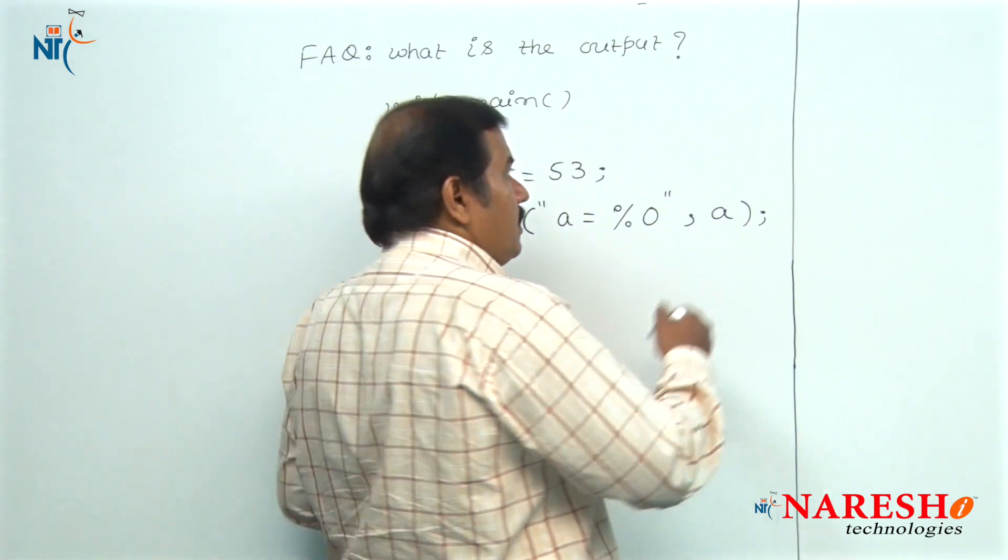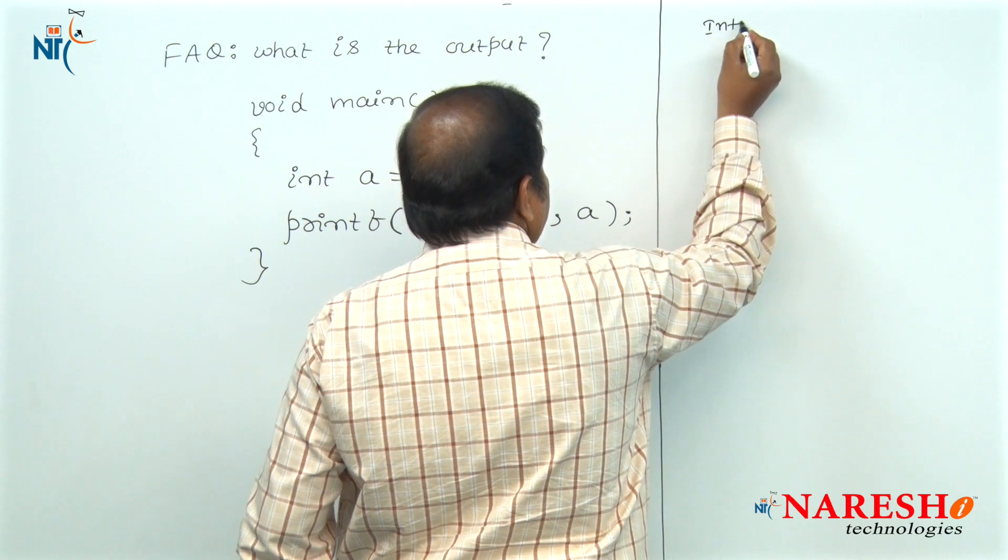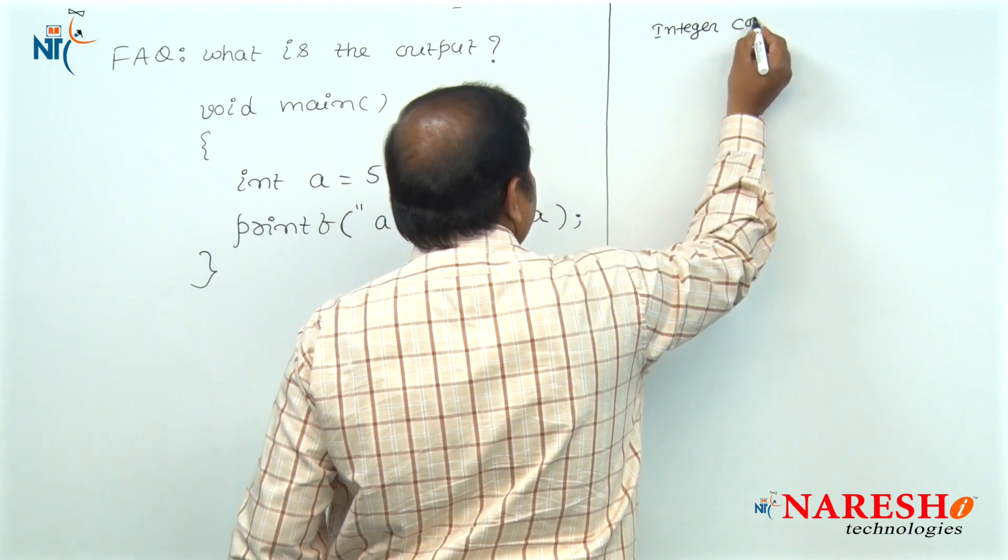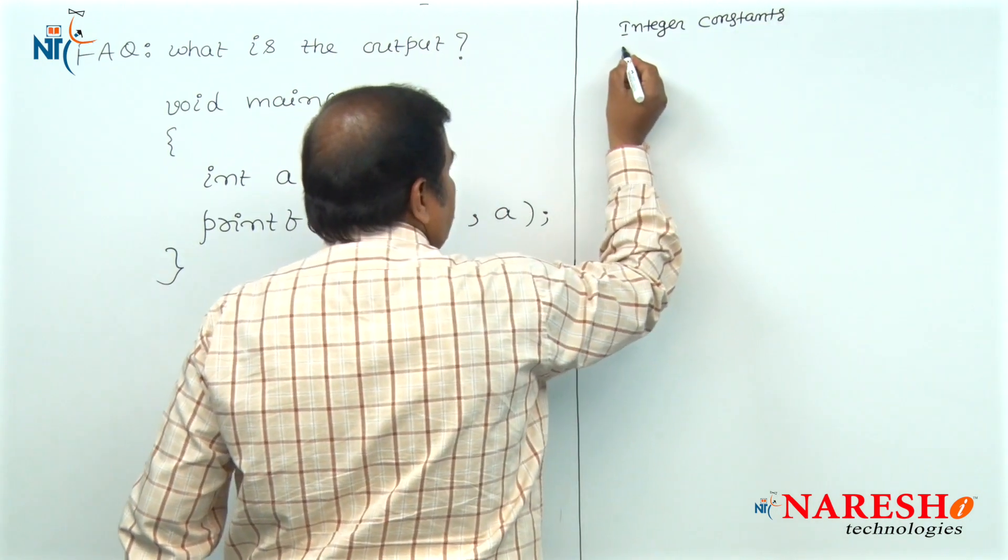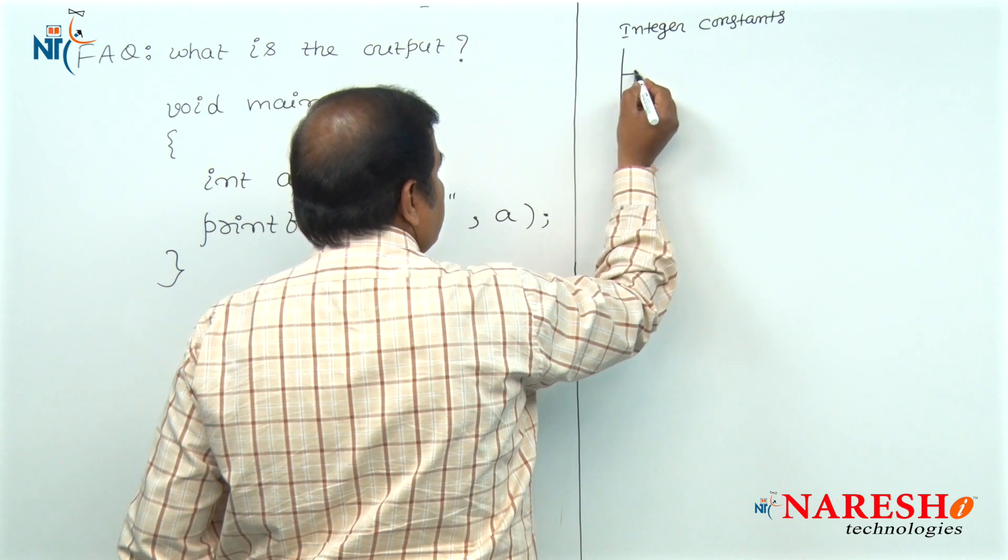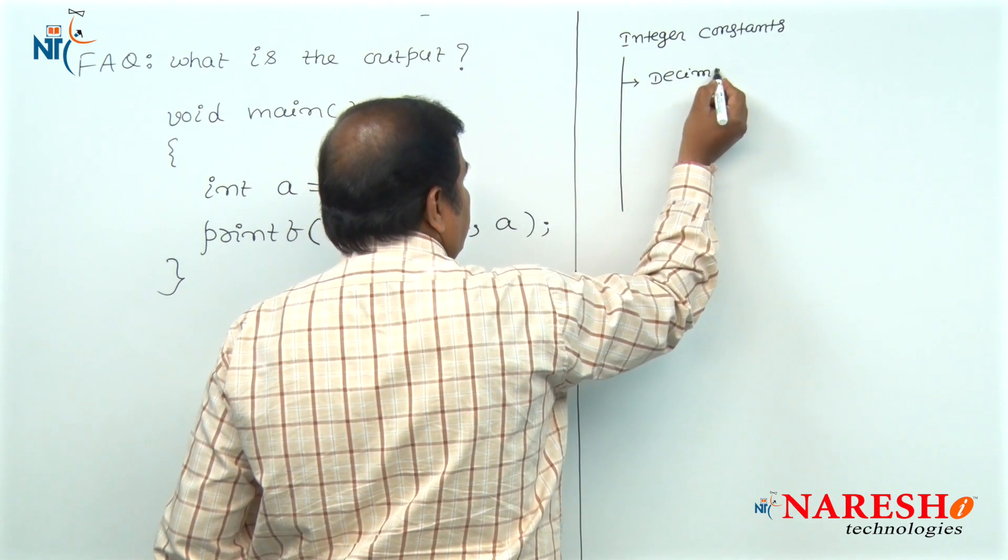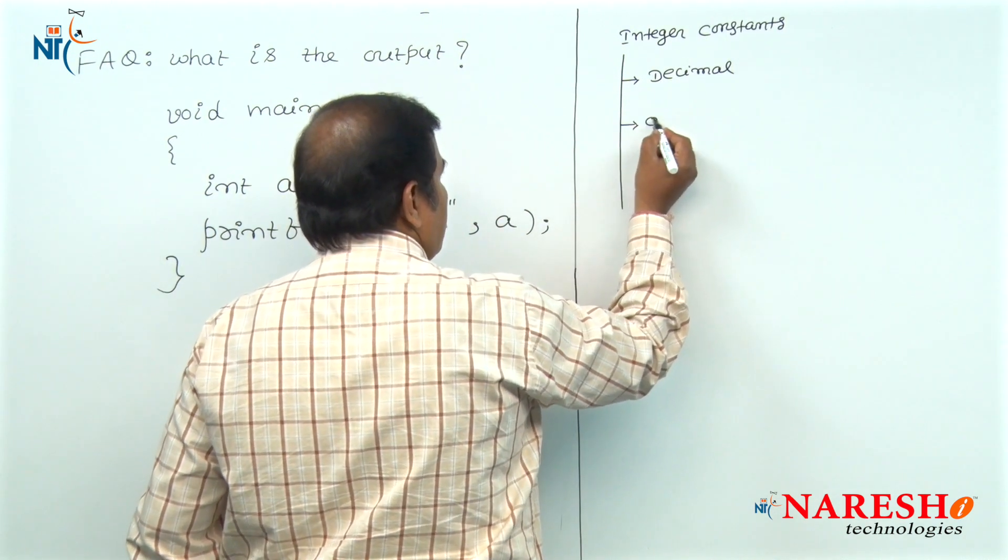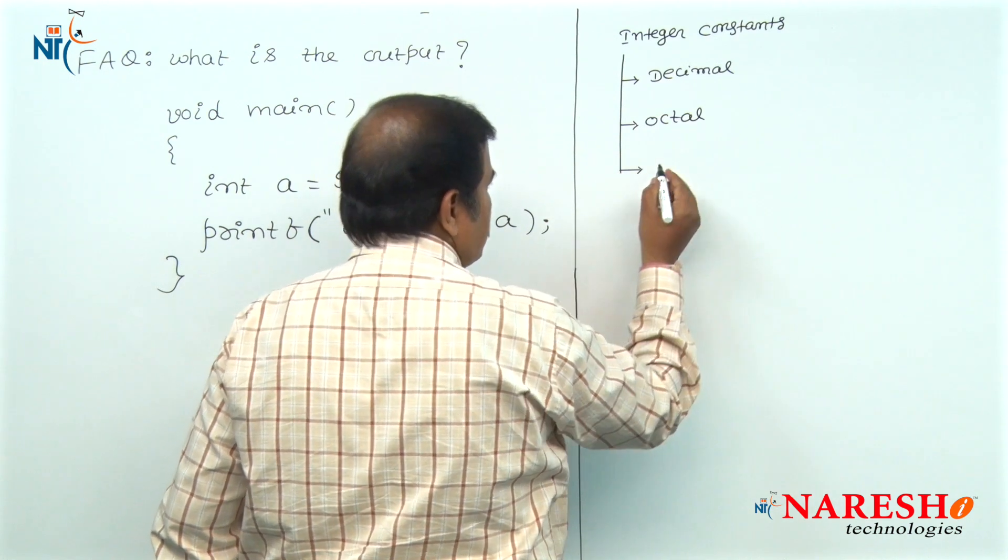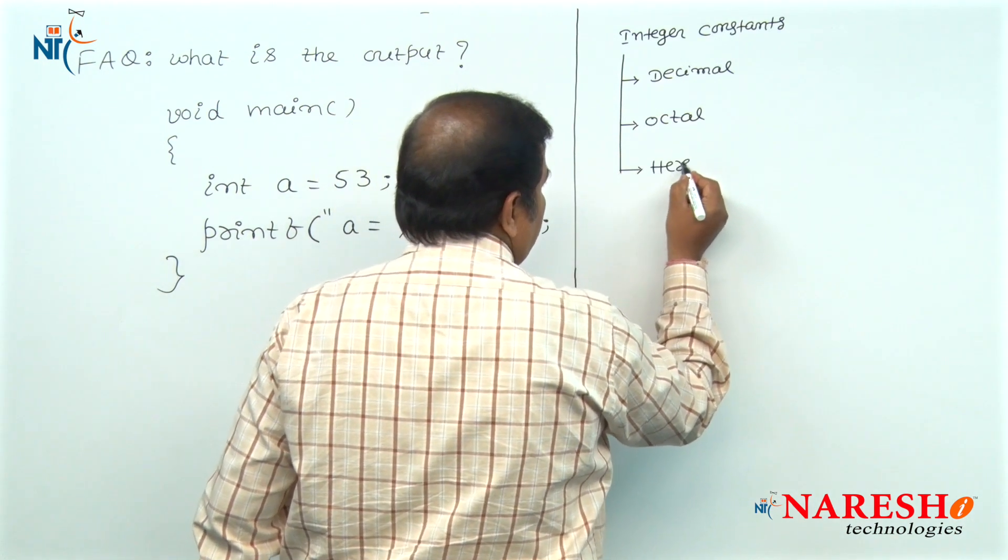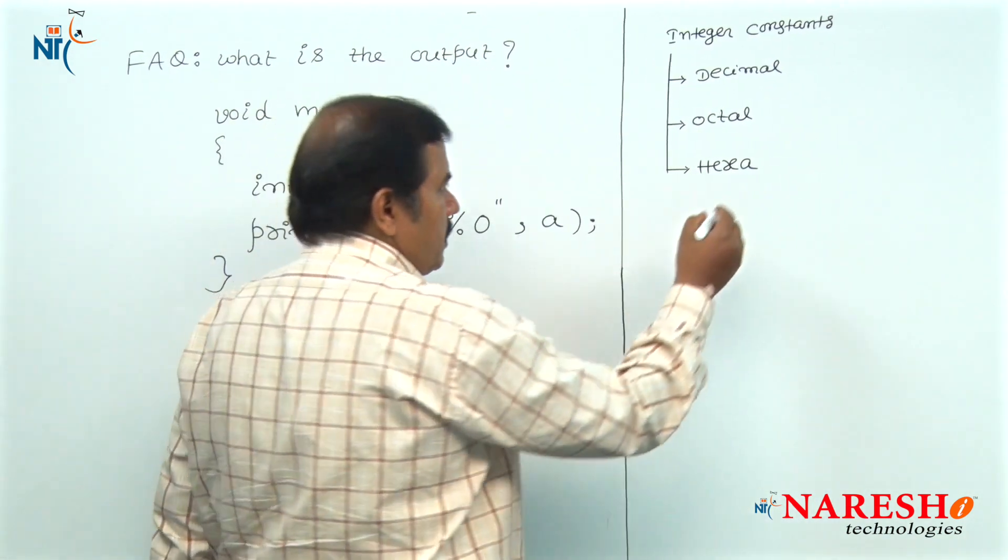In C programming, integer constants are categorized into three types. First type of integer constants are called decimal integer constants. Second type of integer constants are called octal integer constants. And the third type of constants are called hexadecimal integer constants.